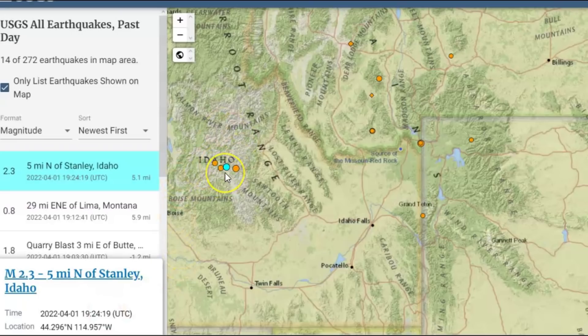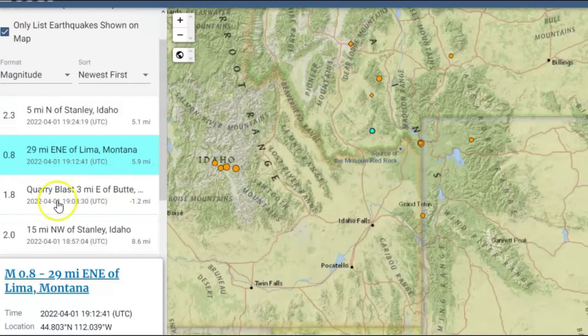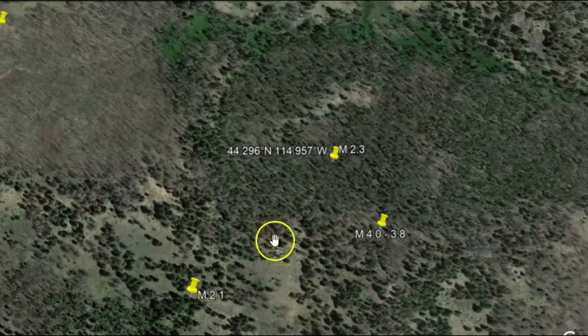So USGS has 14 earthquakes listed for the last 24 hours. These here are Stanley, Idaho. We got one for Lima, Montana. Yeah, supposedly a 0.8 that happened before that. This 2.3 was the largest they've had so far today. So here's the location of that 2.3 for today.